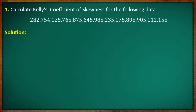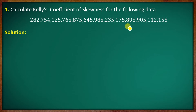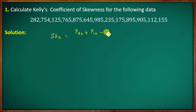First question: calculate Kelly Coefficient of Skewness for the following data: 282, 754, 125, 765, 875, 645, 985, 235, 175, 895, 905, 112, 155. The equation is P90 plus P10 minus 2 times median, divided by P90 minus P10.